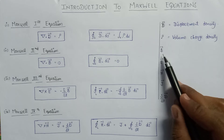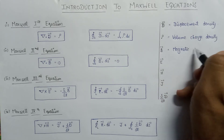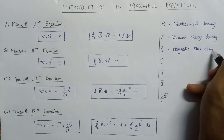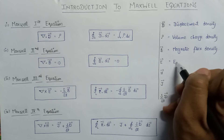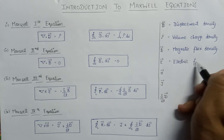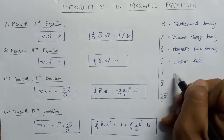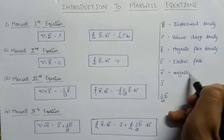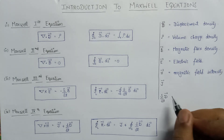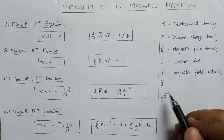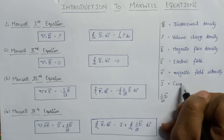Here B is nothing but magnetic flux density. Here E represents the electric field. And H represents the magnetic field intensity. Here J means the current density, that is current passing per unit area — so J is current density.